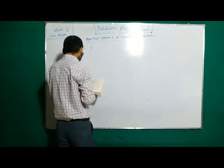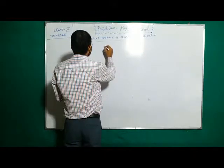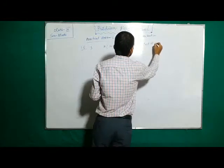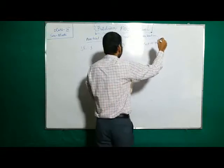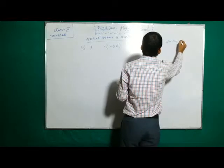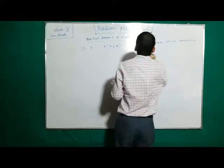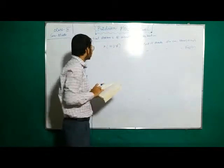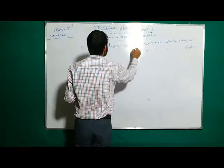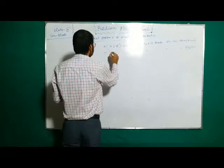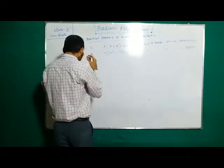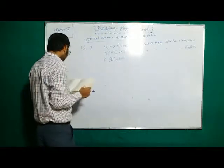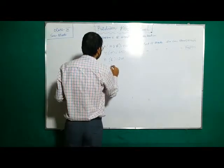Let H be the set of people who can speak Hindi and E be the set of people who can speak English. The total number of people is 400, so n of H union E equals 400. Since 250 can speak Hindi, n of H equals 250. Since 200 can speak English, n of E equals 200. We need to find n of H intersection E — how many people can speak both Hindi and English.